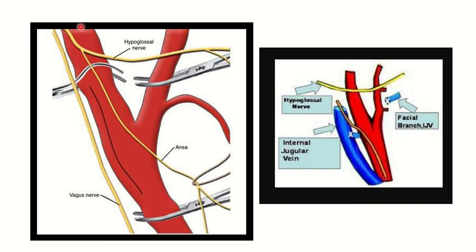We can see the endarterectomy procedure in which different types of clamps are applied. During the clamping and endarterectomy procedure, any nerve that is very closely located to this area may get damaged. Here we can identify the nerves present in this region.